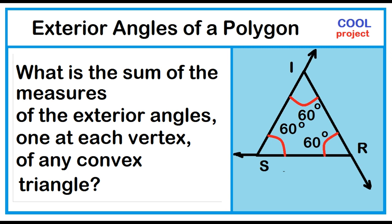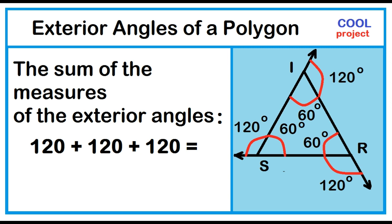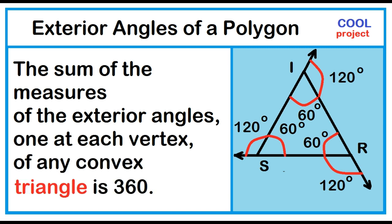Each exterior angle formed measures 120 degrees — 180 minus 60 equals 120 degrees. The sum of the measures of the exterior angles, one at each vertex of any convex triangle, is 360 degrees. 120 plus 120 plus 120 is equal to 360 degrees.